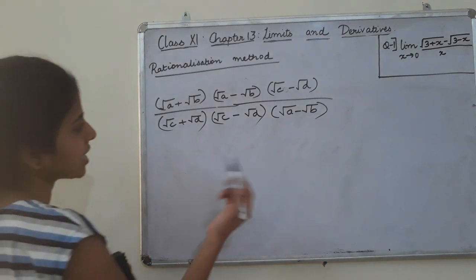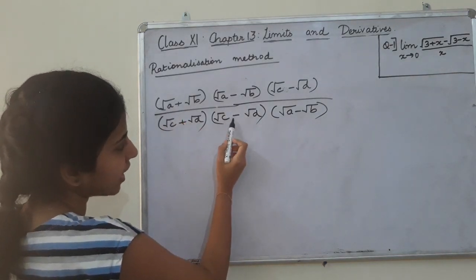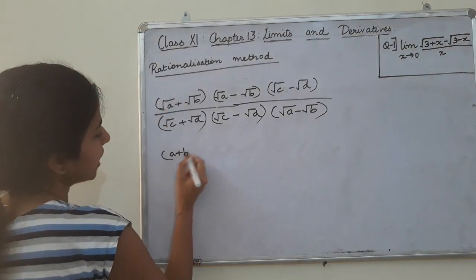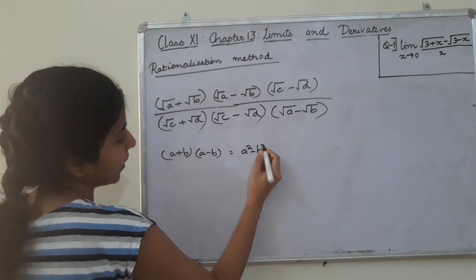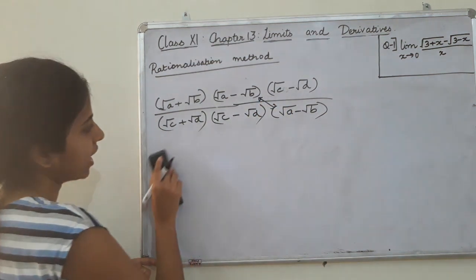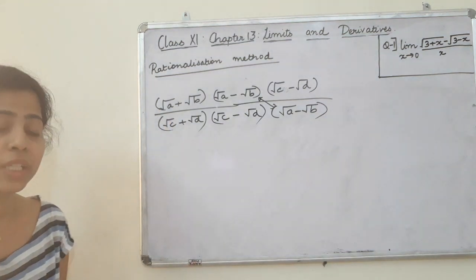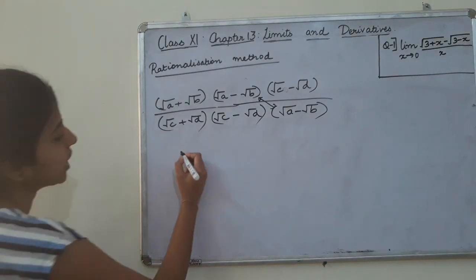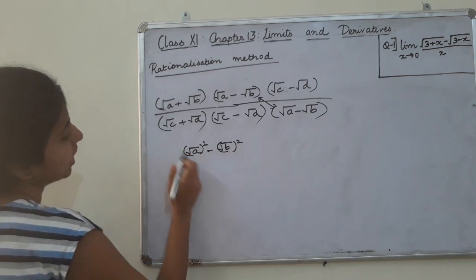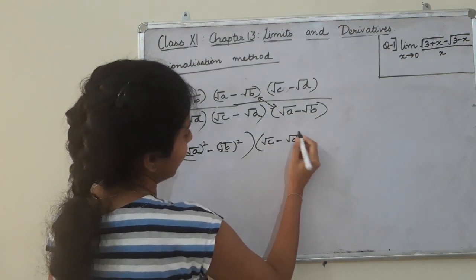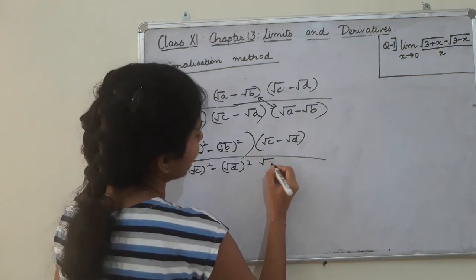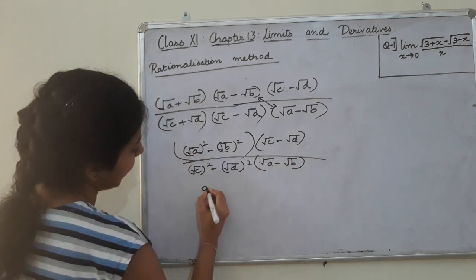We are rationalizing. We want to explain: this is minus root B. We are going to do A plus B into A minus B — which gives A squared minus B squared. So root A times root A gives A, and similarly for root C and root D.